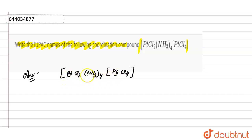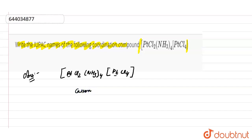As we can see, there are two central metal atoms with two different oxidation states. If the complex ion is a cation, the metal is named the same as the element. Here the central metal atom is platinum, so it will be named as platinum.